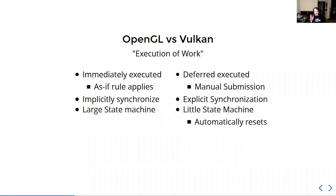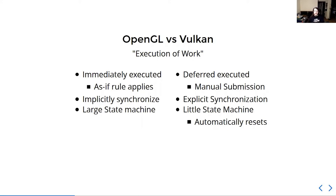If you change that state, you are updating it, and that also goes into the immediate execution. So if you set some state like binding a shader and then do a draw call, the GPU is going to set it up so that shader will be used before the draw call is executed. In Vulkan, the same actual functionality is being executed on the GPU, but the mental model you have about them is very different.